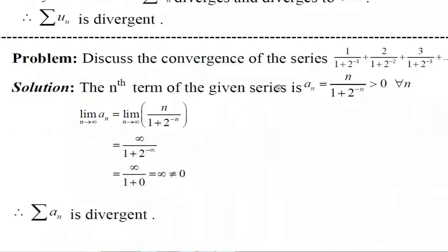Now let us discuss the convergence of the series 1/(1+2^(-1)) + 2/(1+2^(-2)) + 3/(1+2^(-3)) + ... When we say convergence, we are testing the behavior of the series — whether it is convergent, divergent, or oscillates. The nth term is not given here, so we must determine it from the pattern.